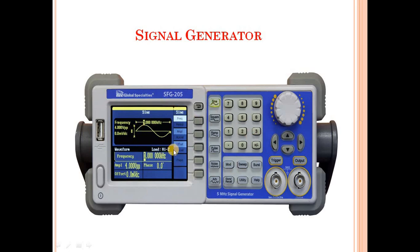So we have a photo of the CRO and DSO alongside the signal generator here. We can generate various waveforms: sine wave, square wave, ramp wave, pulse, and noise. So this device is called a signal generator.